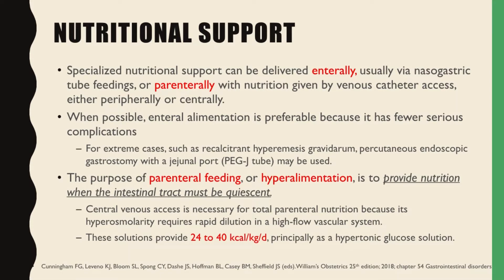For extreme cases such as recalcitrant hyperemesis gravidarum, percutaneous endoscopic gastrostomy with a jejunal port, or PEG-J tube, may be used. The purpose of parenteral feeding or hyperalimentation is to provide nutrition when the intestinal tract must be quiescent. Central venous access is necessary for total parenteral nutrition because its hyperosmolarity requires rapid dilution in a high-flow vascular system. These solutions provide 24 to 40 kilocalories per kilogram per day, principally as a hypertonic glucose solution.